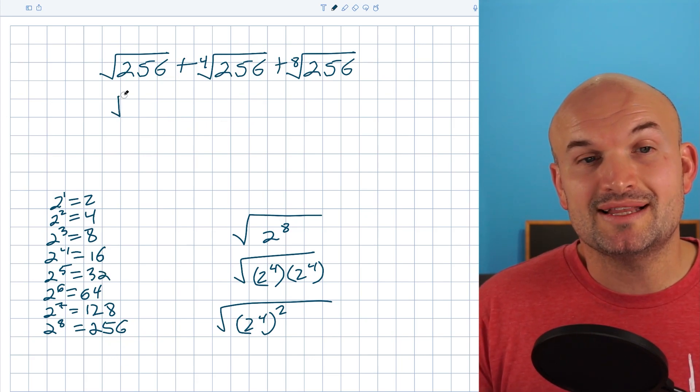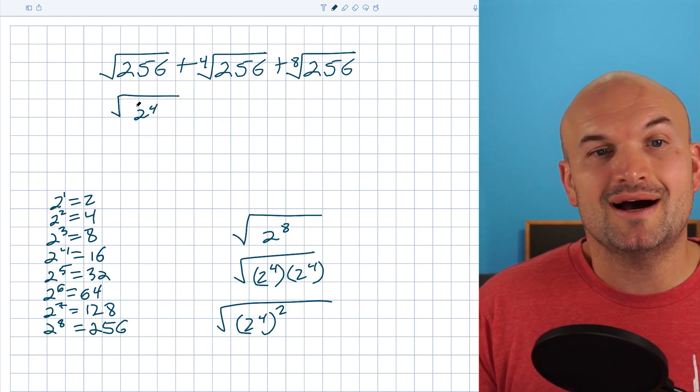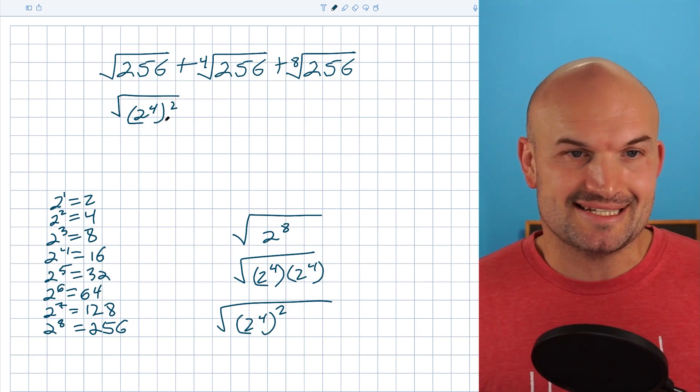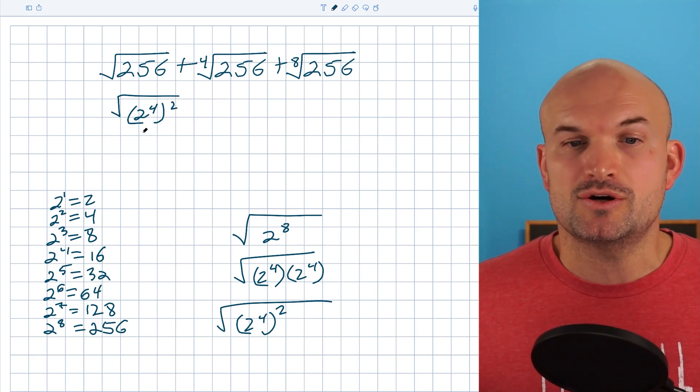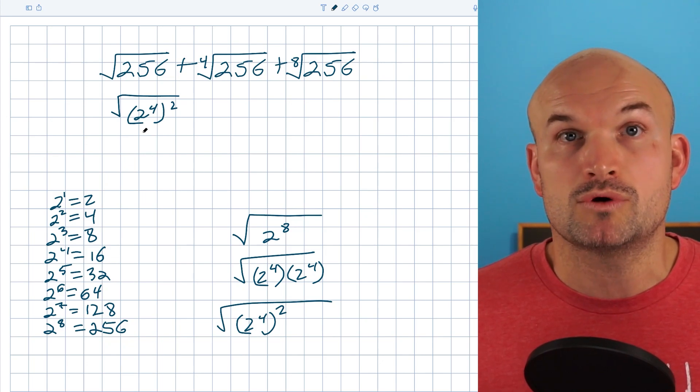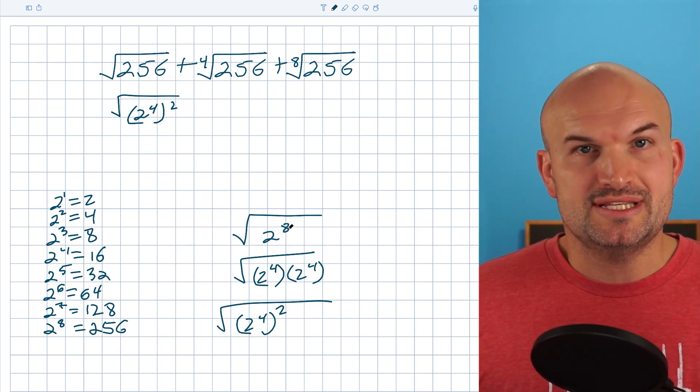So therefore, I'm going to go ahead and rewrite this as a two to the fourth squared. Now, again, I know you could rewrite that as a 16, but I'm just going to leave it here so we can visually see what's going on. So we can visually see what we're looking for. Again, that gave us two to the eighth.